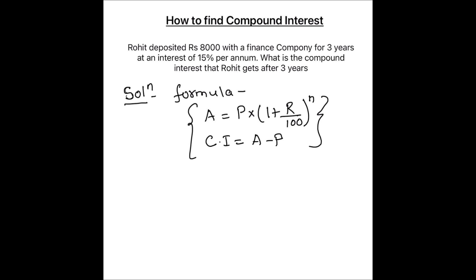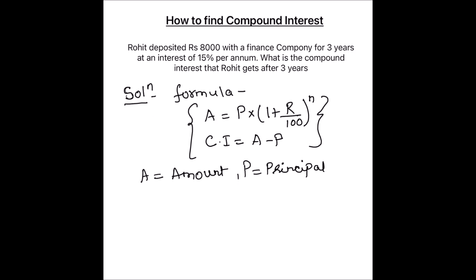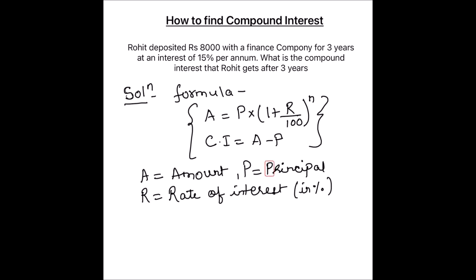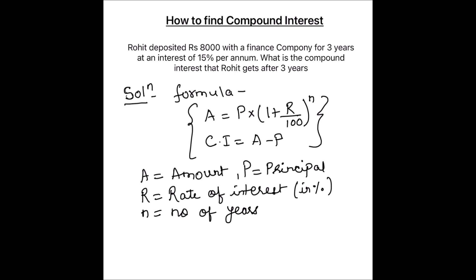In this formula, A is the amount, P is the principal — the amount which Rohit deposited, R is the rate of interest per year which is in percentage, and N is the number of years.